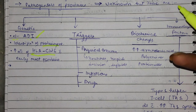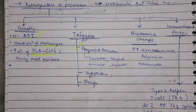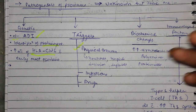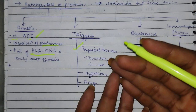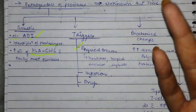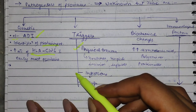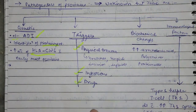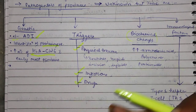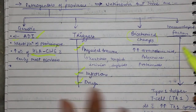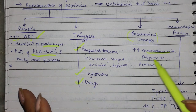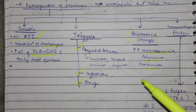Besides, psoriasis can also be triggered by physical trauma — like scratches, surgical incisions, injury. Psoriasis can also be found in areas with a lot of pressure, like elbows. So this can be a trigger point. In addition, infections or drugs can also be triggers. There are also biochemical changes — the levels of polyamines and proteins are elevated.